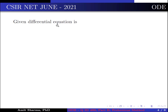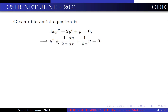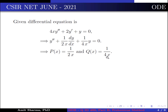The given differential equation is 4x·y'' + 2y' + y = 0, which simplifies to y'' + (1/2x)·y' + (1/4x)·y = 0. This gives p(x) = 1/(2x) and q(x) = 1/(4x). This implies x = 0 is a singular point because at x = 0, p(x) and q(x) are not analytic.